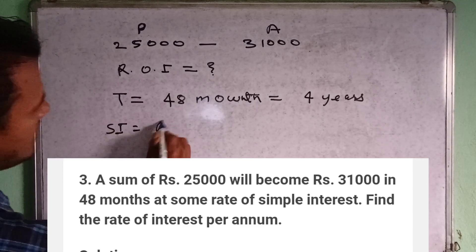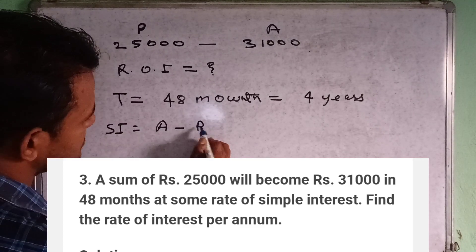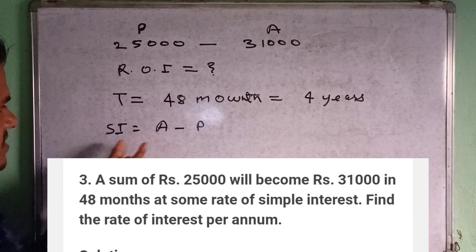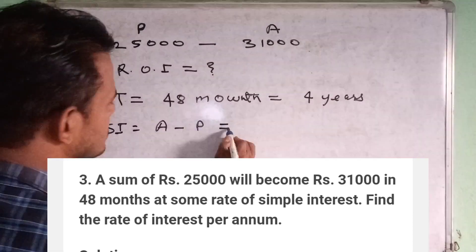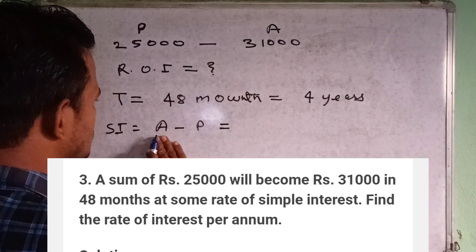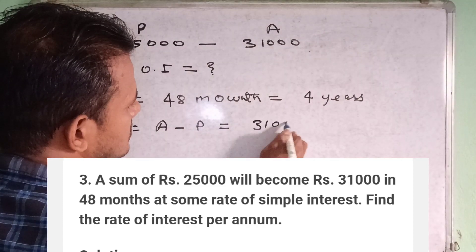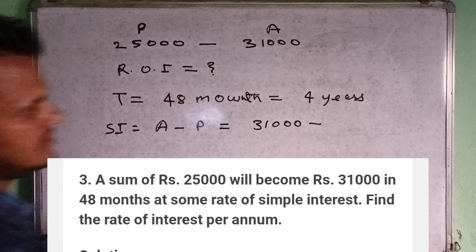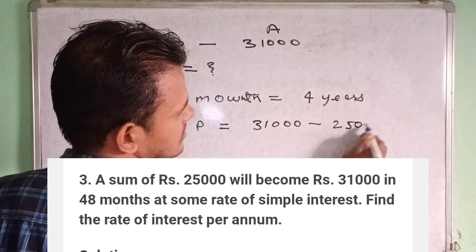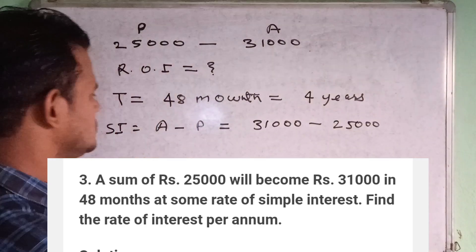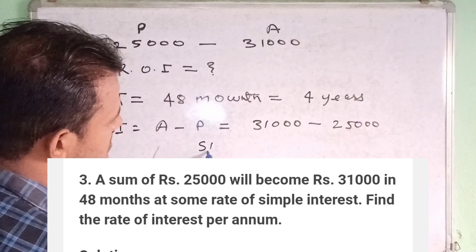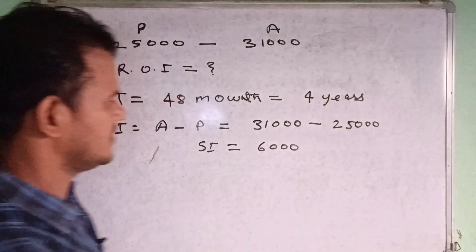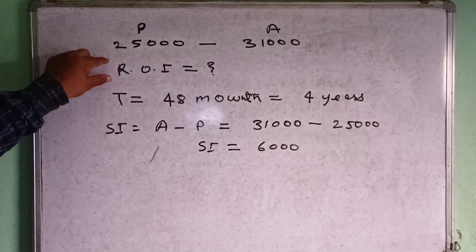Simple interest equals amount minus principal. So 31,000 minus 25,000 gives us the simple interest of 6,000. Now we need to find the rate of interest.